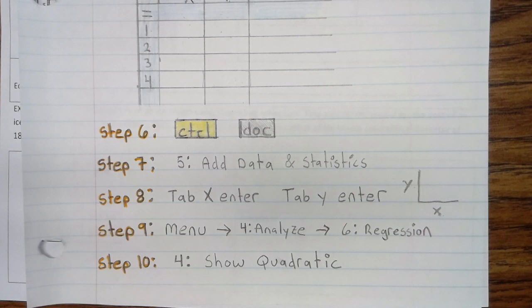Step 9: Press Menu 4, Analyze, 6, Regression. Step 10: Show Quadratic.